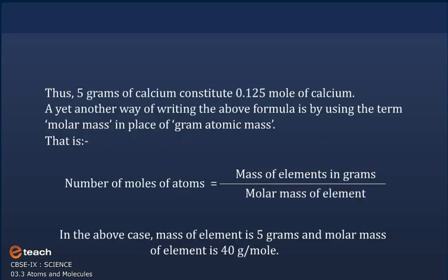Another way of writing the formula is using the term molar mass in place of gram atomic mass: number of moles of atoms = mass of element in grams ÷ molar mass of element. In this case, mass of element is 5 grams and molar mass of element is 40 grams per mole.